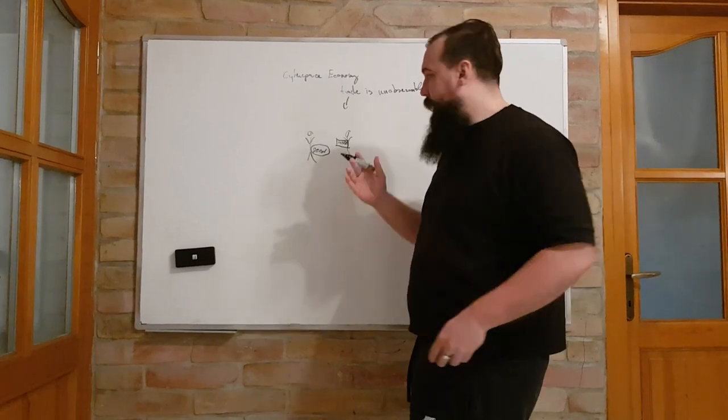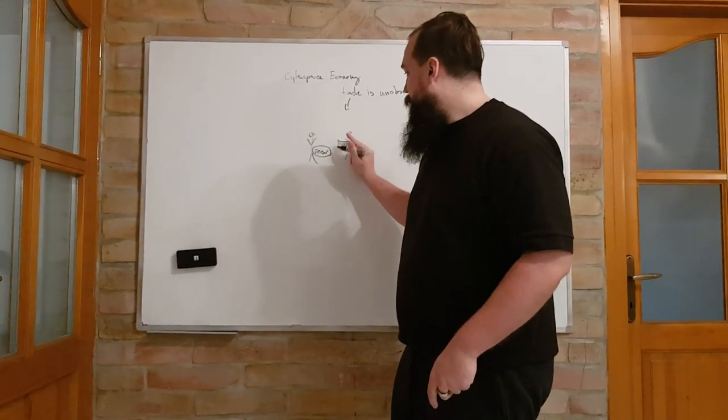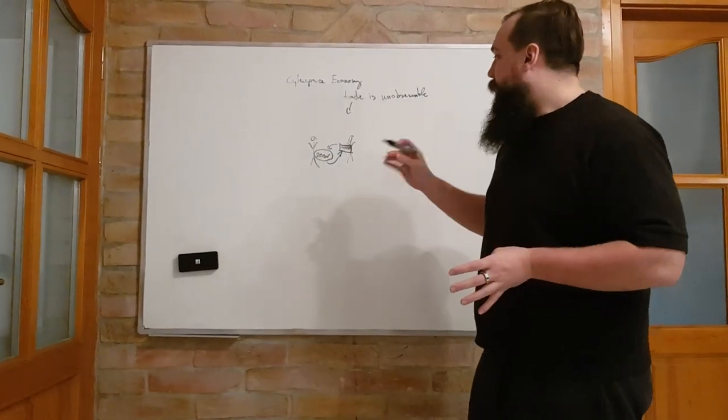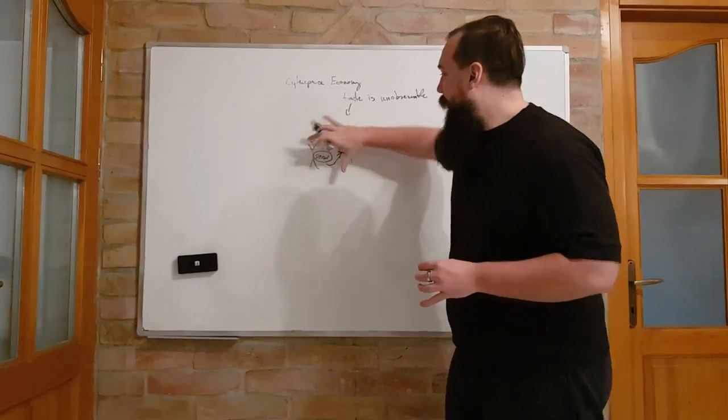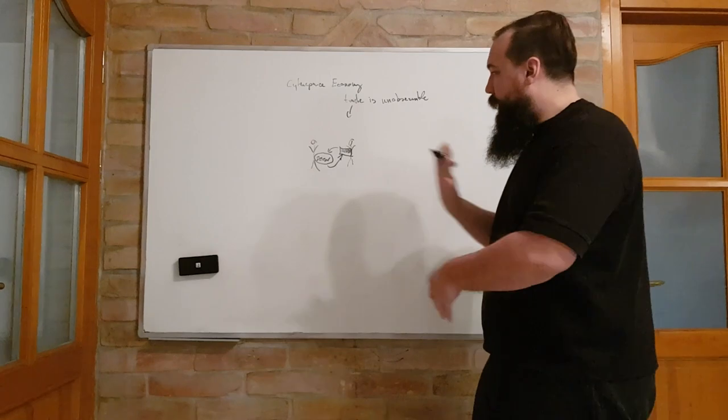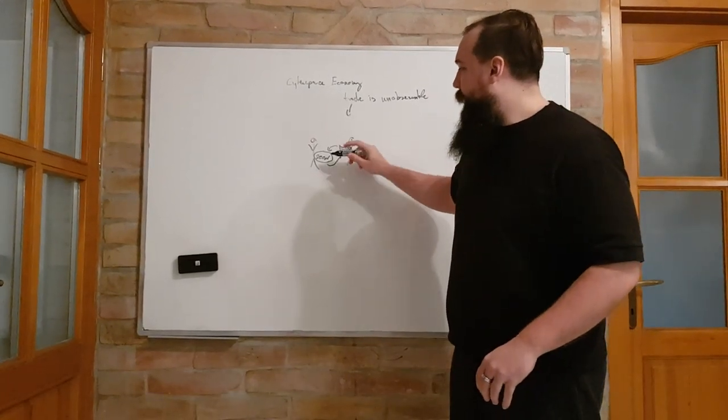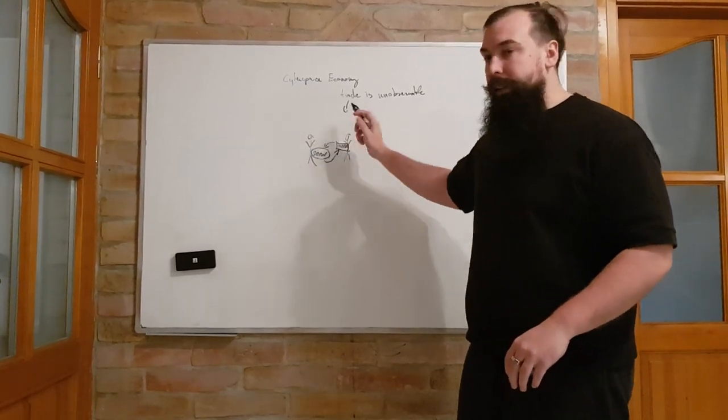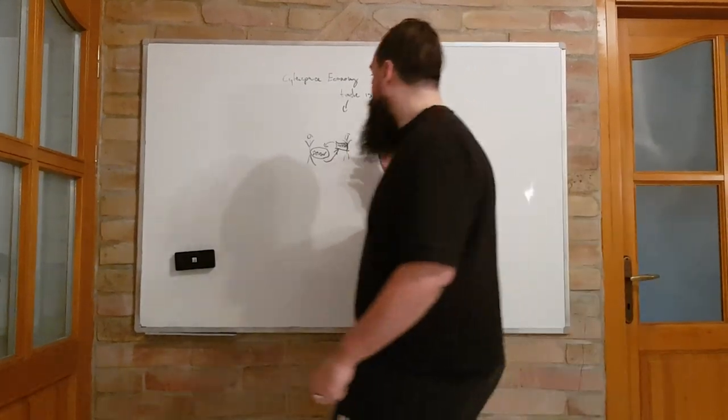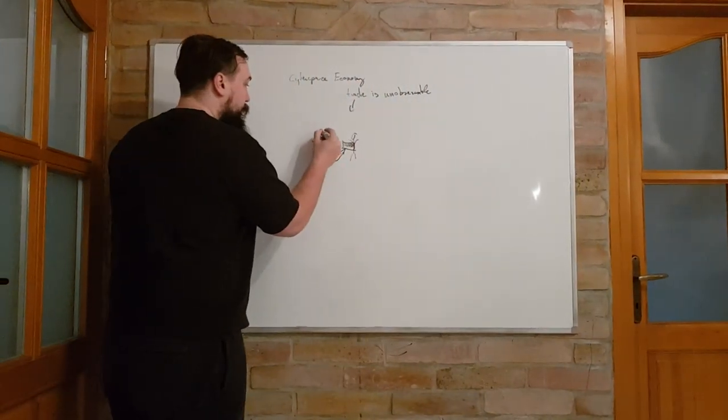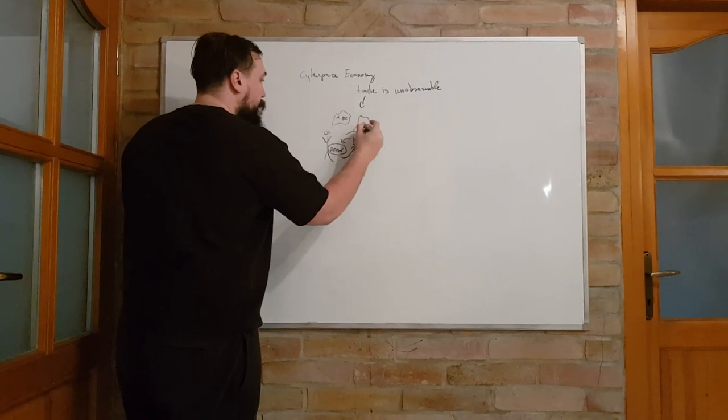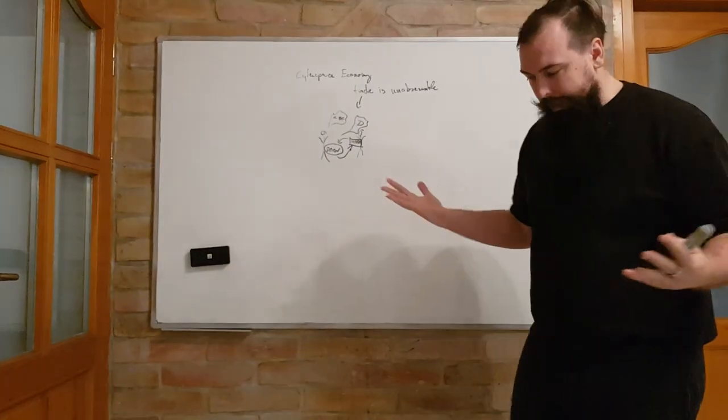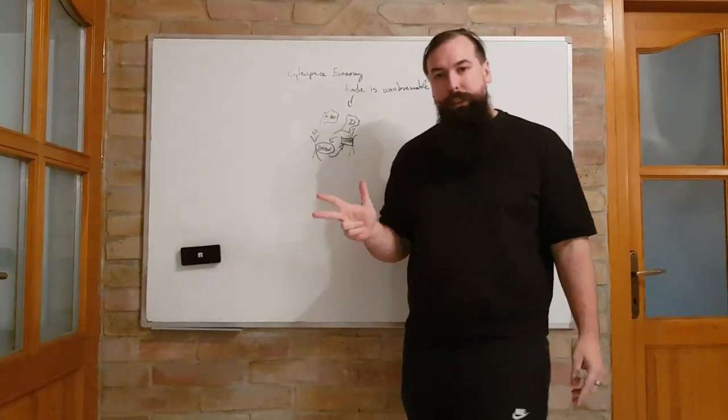They are exchanging these things—money for goods. That's a trade. The trick is it's happening in a context. Although money mediates the exchange of goods, there is something that mediates the entire trade: the communication between the parties.